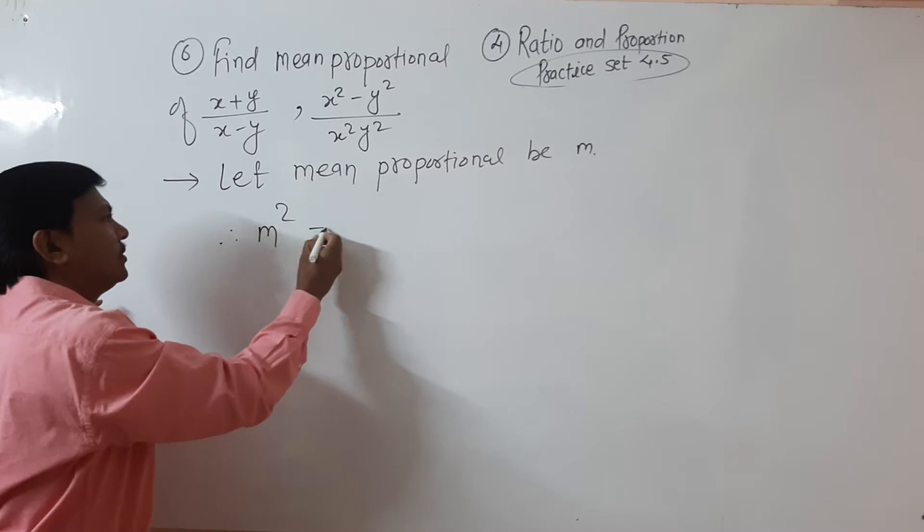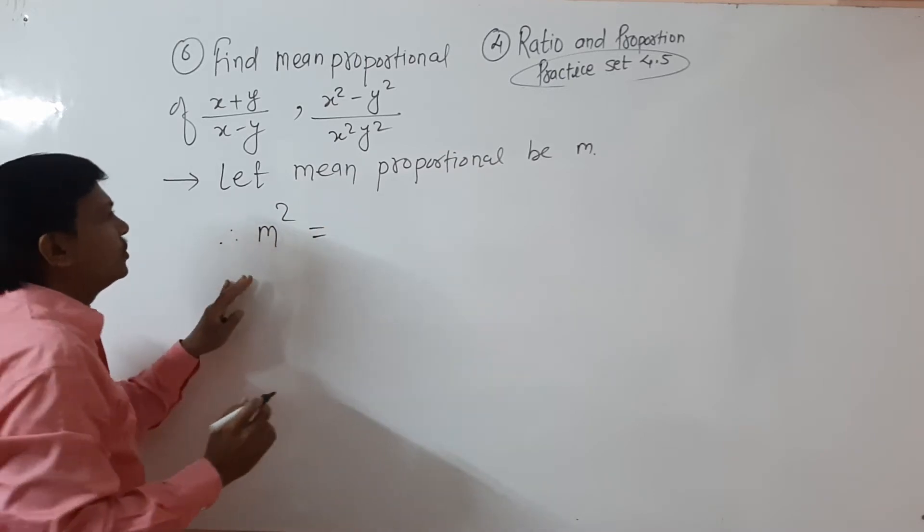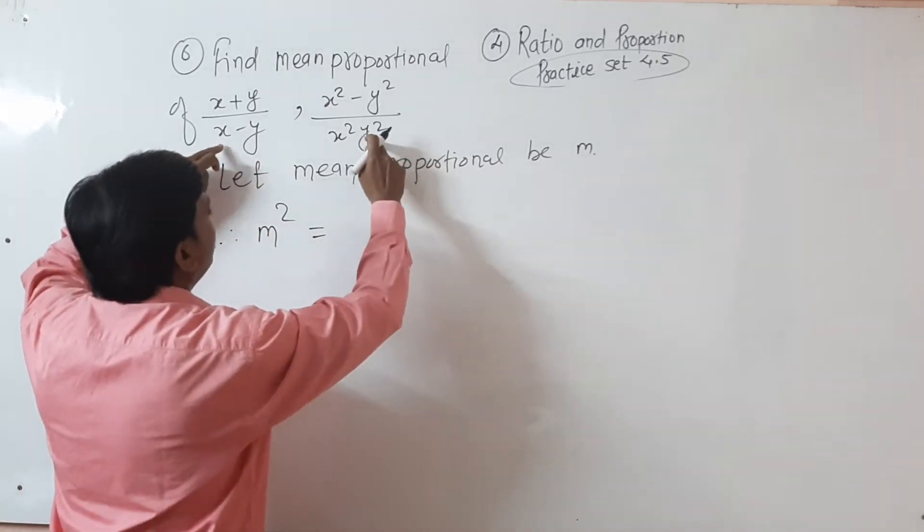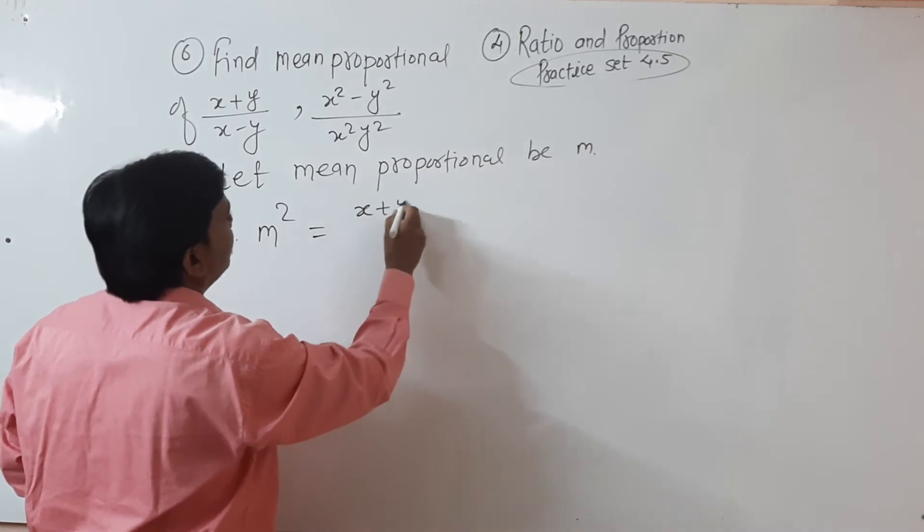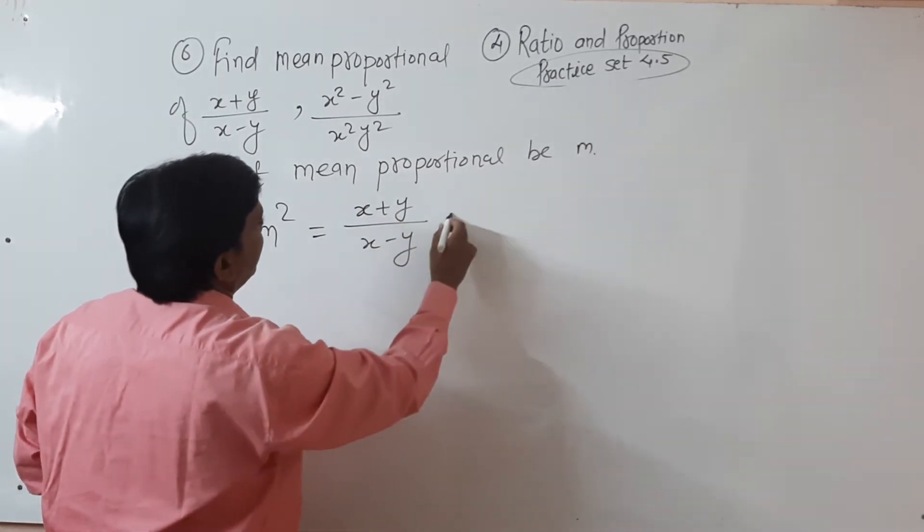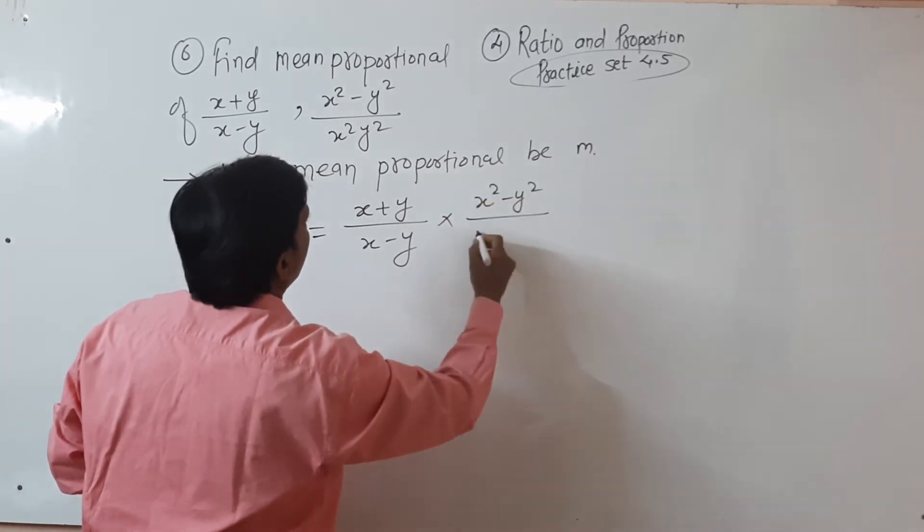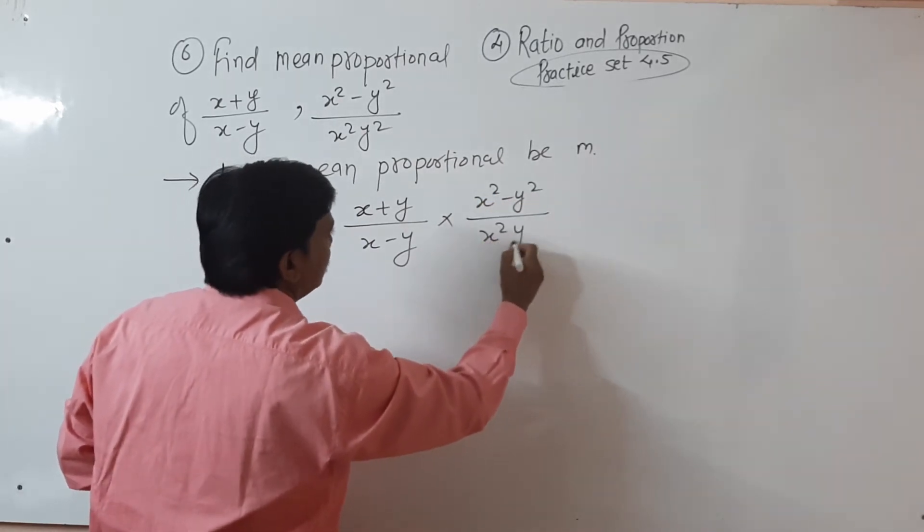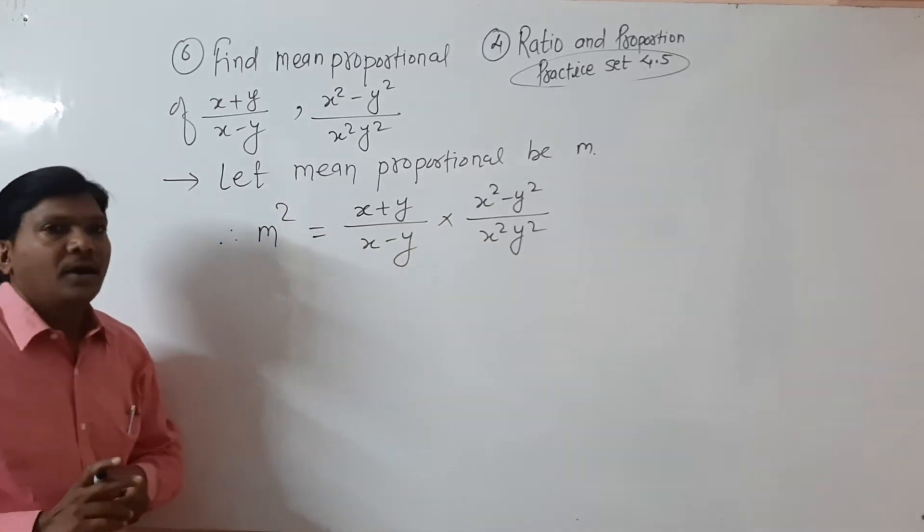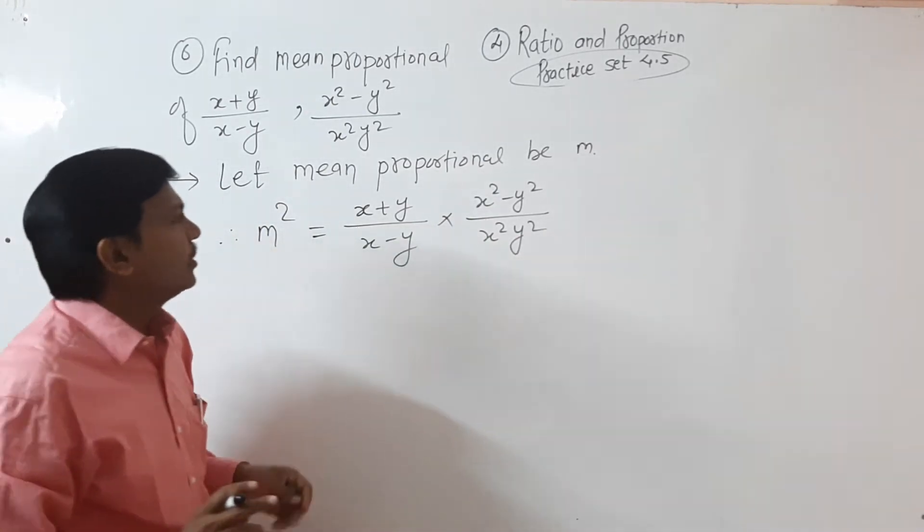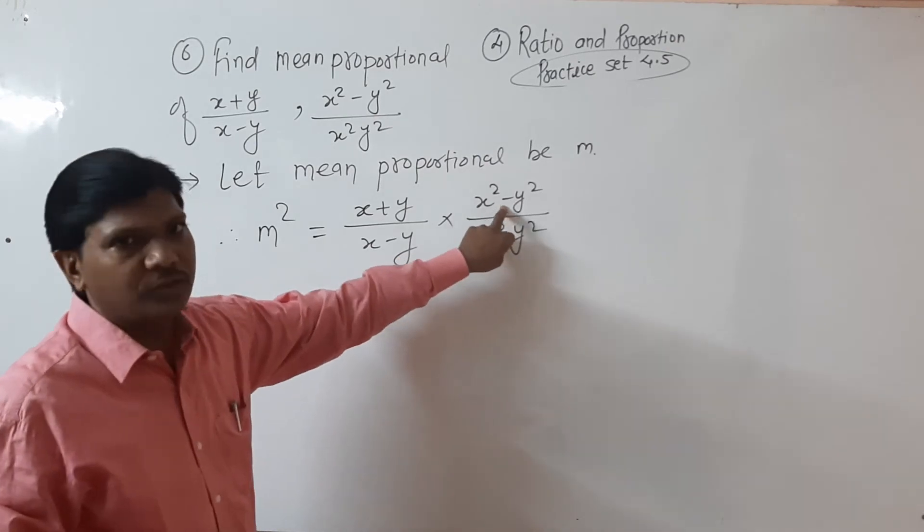Therefore m². This is what we have to find out. m² equals the product of these two: (x+y)/(x-y) times (x²-y²)/(x²y²). So what do we do? Next step is use formula for this.